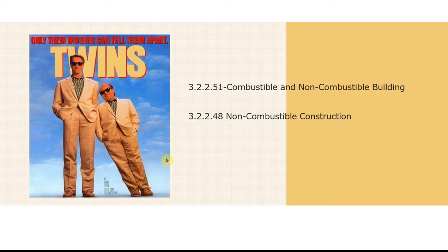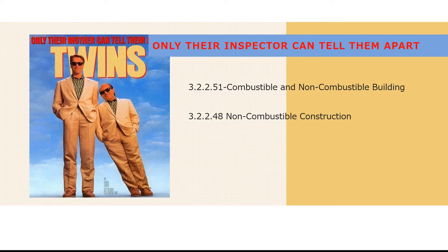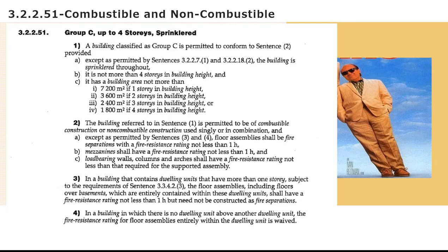Today we're going to look at two buildings. One is a Classification 32251 combustible and non-combustible building construction, and the other is a 32248 non-combustible building construction. These buildings will look the same; however, only the inspector or the architect can tell them apart. Section 32251 allows the construction to be either combustible or non-combustible, singly or in combination. So you can use combustible components or non-combustible components within that building construction under 32251.